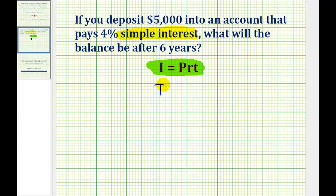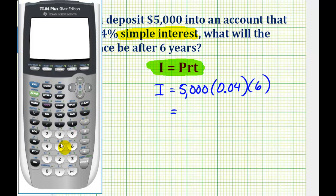So the interest earned is going to be equal to the principal, which is $5,000, times the rate of return as a decimal. 4% as a decimal would be 0.04 times time in years, so T is six. So 5,000 times 0.04 times six is $1,200.